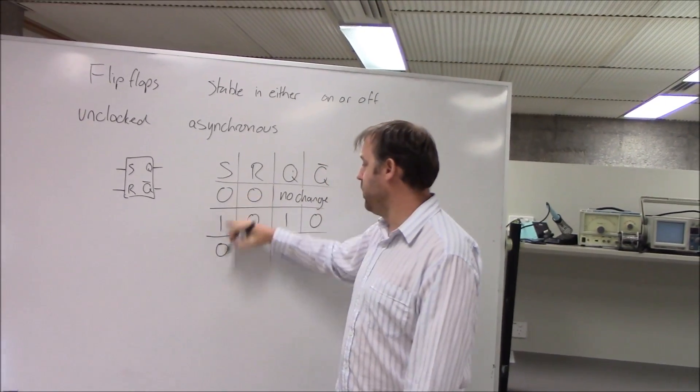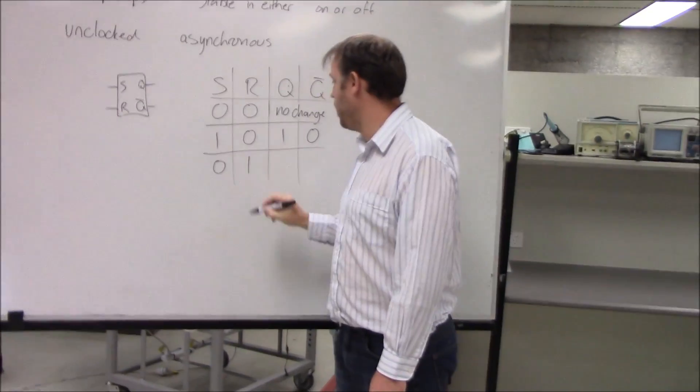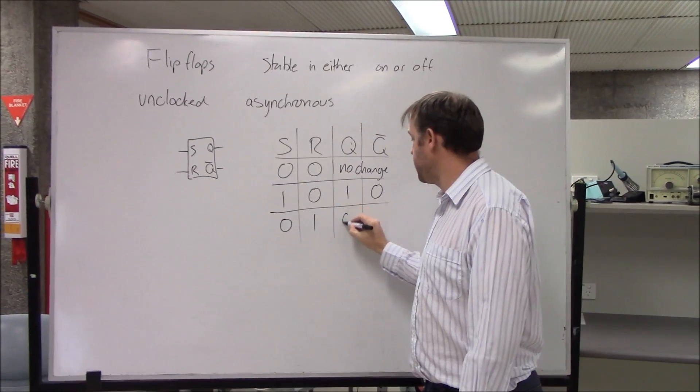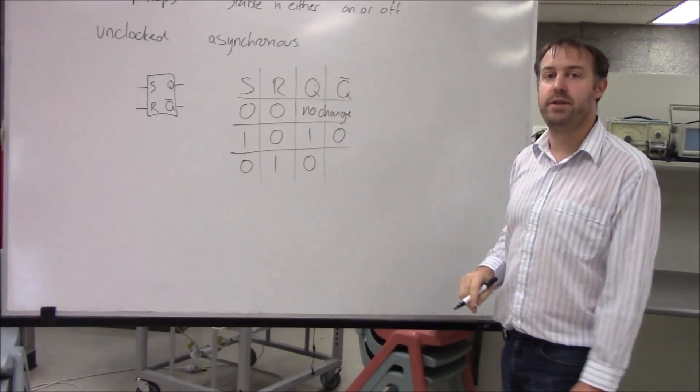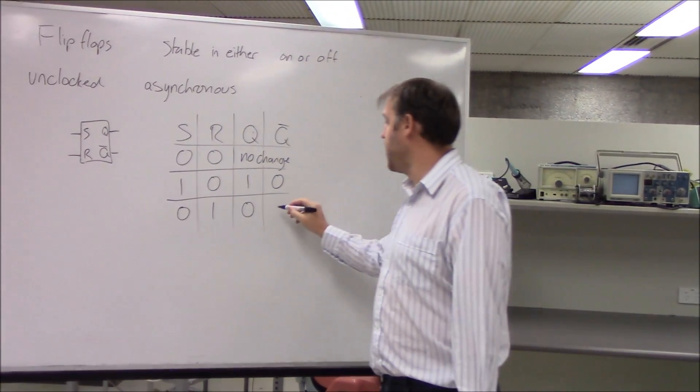If I have set low and reset high, then Q will be set to zero, so I've reset my output, and Q-bar will be set to high.